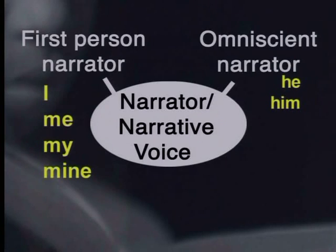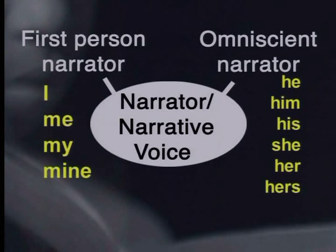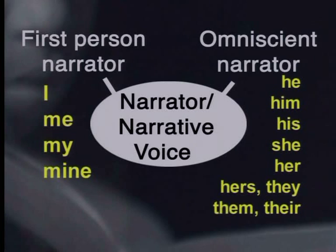Such narration uses pronouns like he, him, his, she, her, hers, they, them, their, and theirs. Third person pronouns like these are used instead of I, me, and my, because the omniscient narrator is not part of the story. Instead, this type of narrator tells us about events that he or she is not actually involved in.